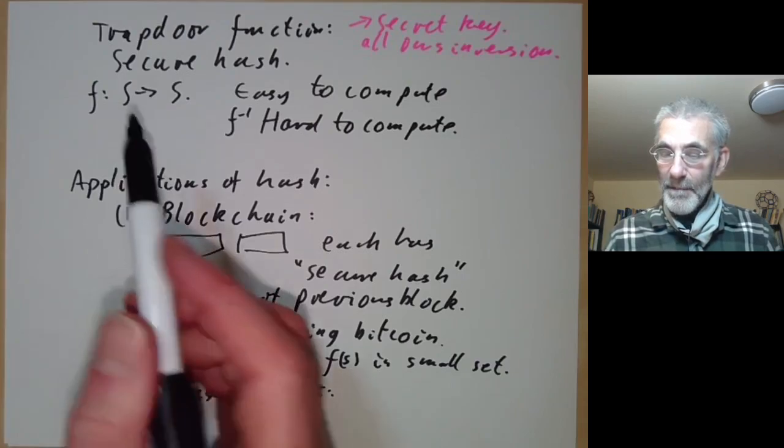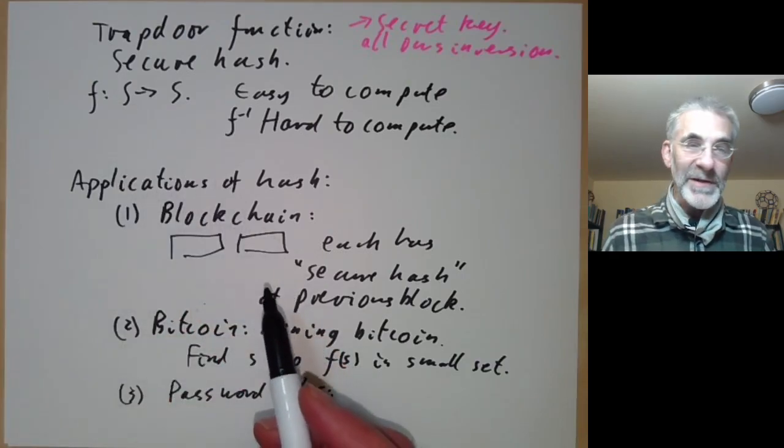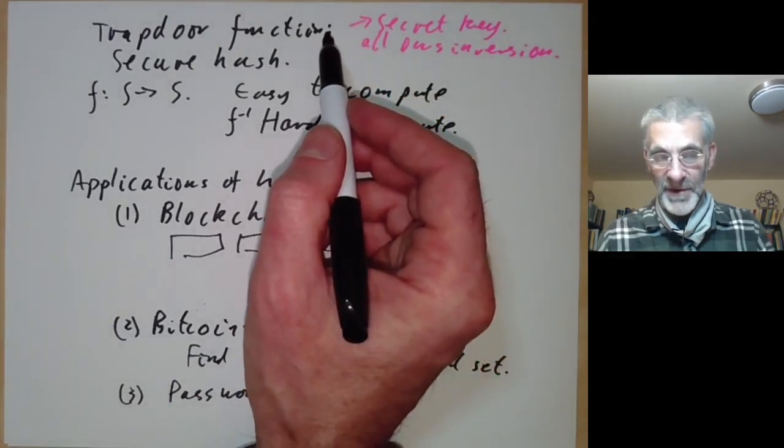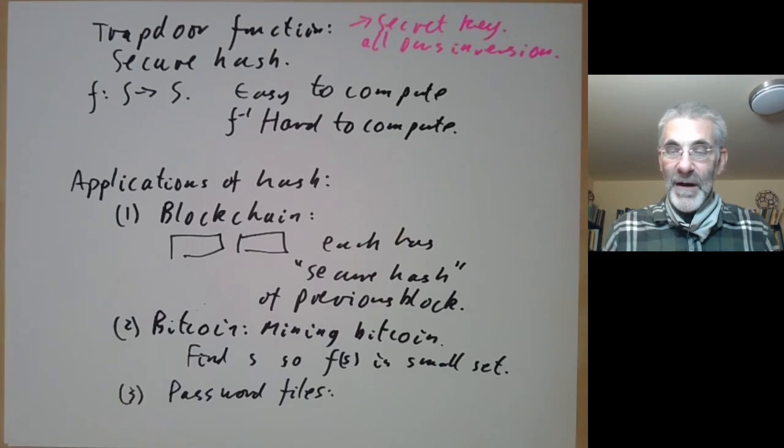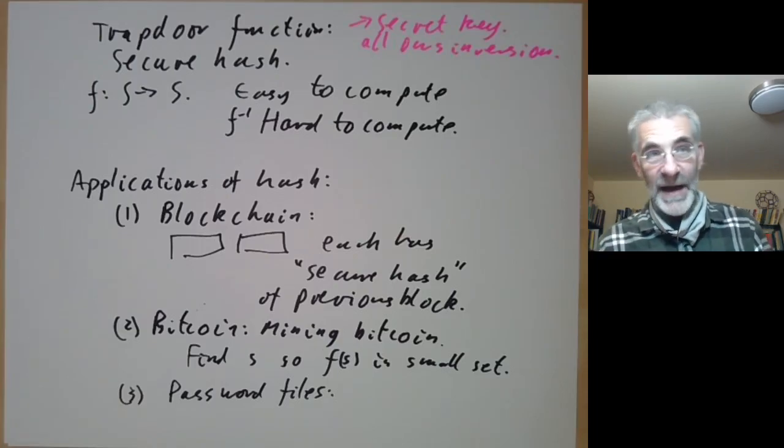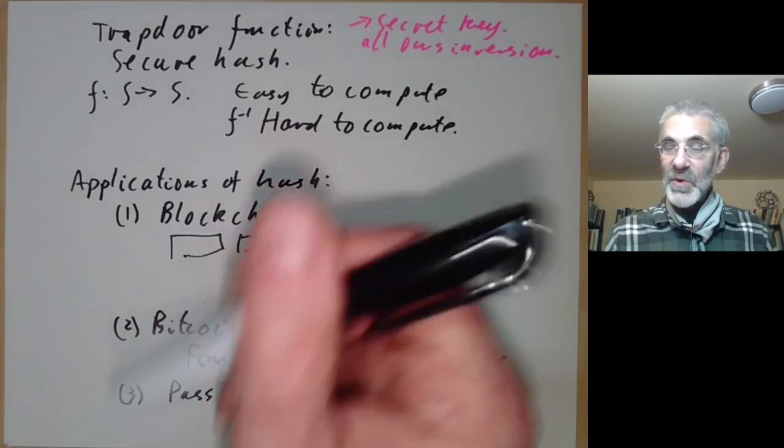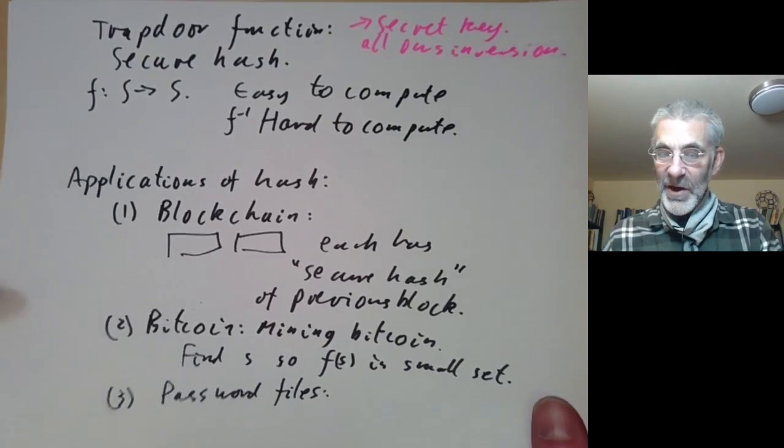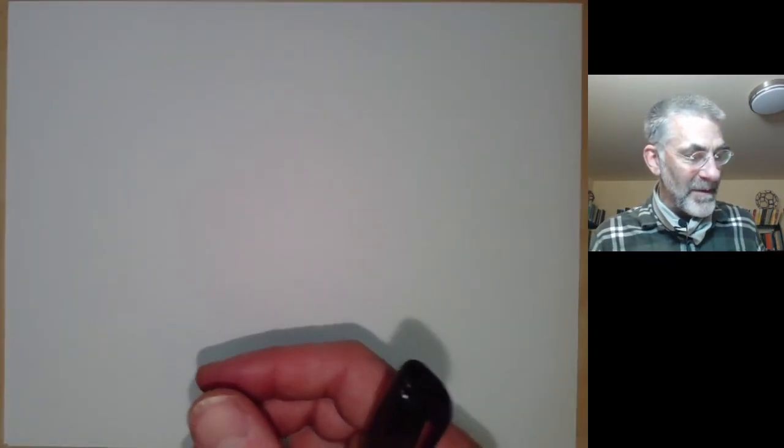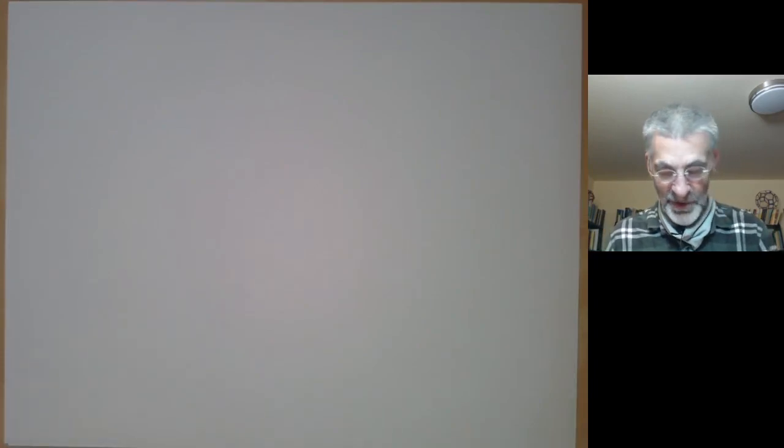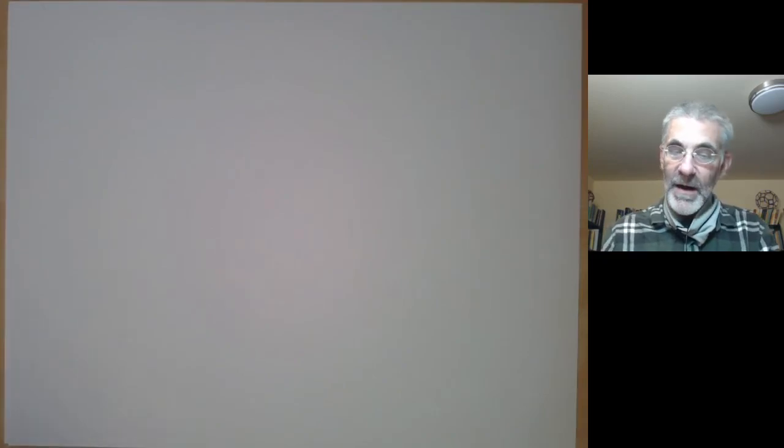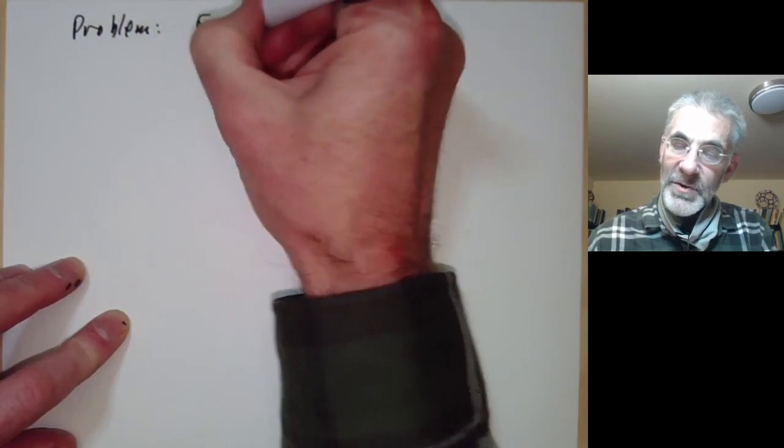There's been a certain amount of speculation about whether certain public secure hash files are really secretly trapdoor functions. Because of course if you had a trapdoor function and published it as a secure hash function, you'd be able to read everybody's secret messages that they've hashed. But as far as I know, the secure hash functions in common use don't have secret trapdoors, and no one's even been able to think of a way in which they could have secret trapdoors. Anyway, we now come to the following problem: find a trapdoor function.